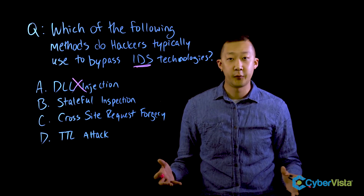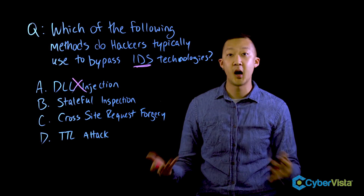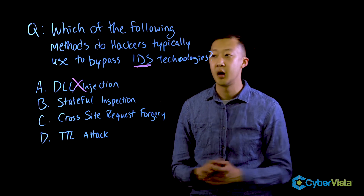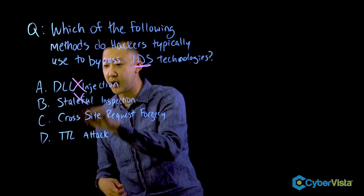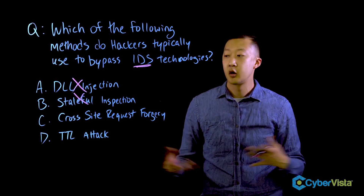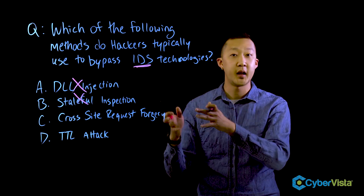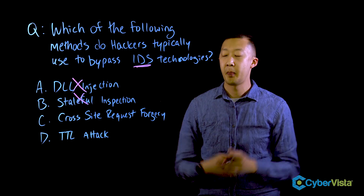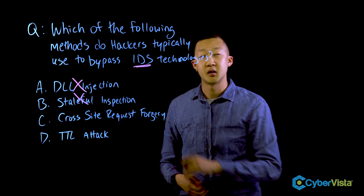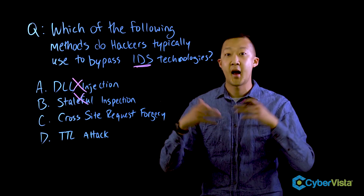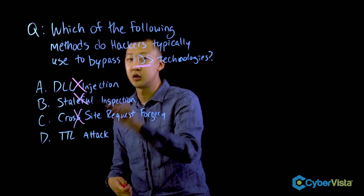Now let's look at B: Stateful Inspection. Stateful Inspection is actually a method that different firewalls can use, or it's a type of firewall. It's actually a security technology meant to help you, so we know this is not the right choice. Cross-site request forgery deals with victims accessing their financial institutions such as banks, and the attackers make requests on behalf of, or as if they were, the victim. So that really doesn't have anything to do with IDS.